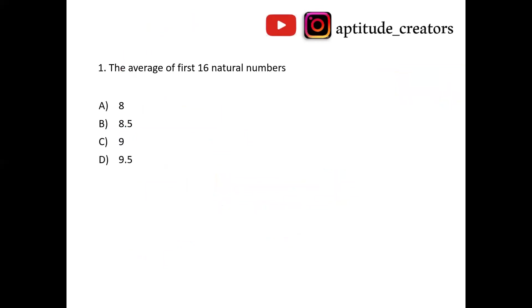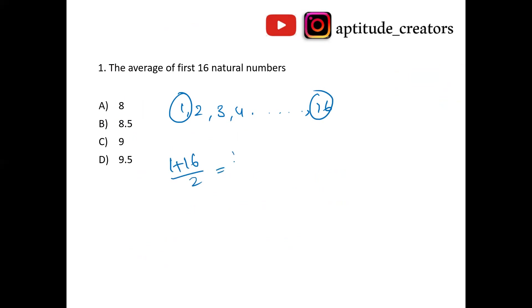Question one: What is the average of the first 16 natural numbers? First number plus last number divided by two: 1 plus 16 divided by 2 gives 17 by 2, which is 8.5. Answer is option B, 8.5.